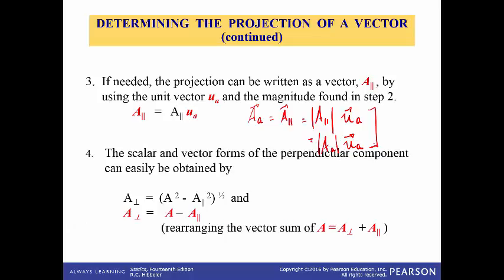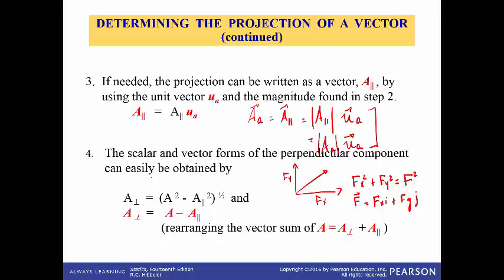Finally, let's say that you want to find the perpendicular component. Remember whenever we have x and y, a vector in Fx and Fy, we said it was Fx squared plus Fy squared equals F squared. So in vector notation, F equals Fx·i plus Fy·j. This is where that equation comes from.